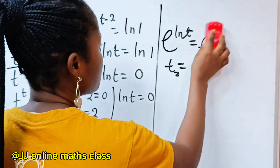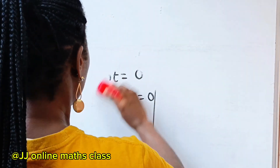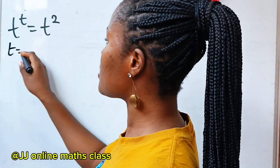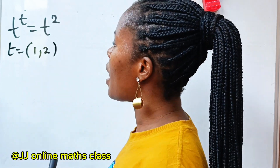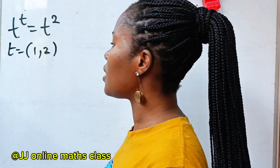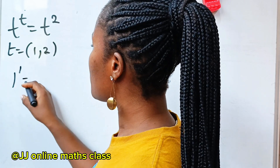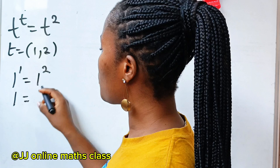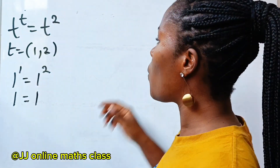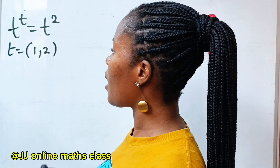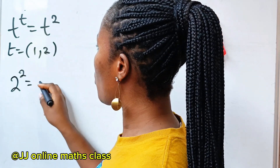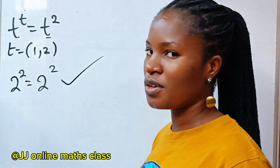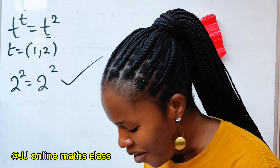Let's check that our answers of t equals 1 and t equals 2 are correct. When t equals 1: 1 to the power of 1 equals 1 to the power of 2 — both sides equal 1. When t equals 2: 2 to the power of 2 equals 2 to the power of 2. Both sides of the equation are correct.